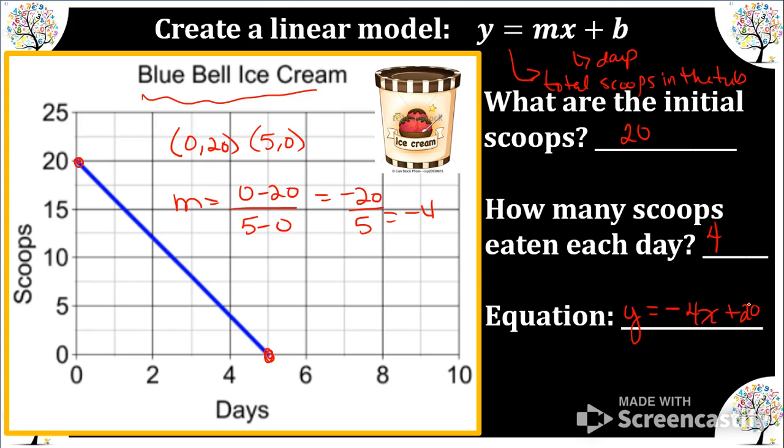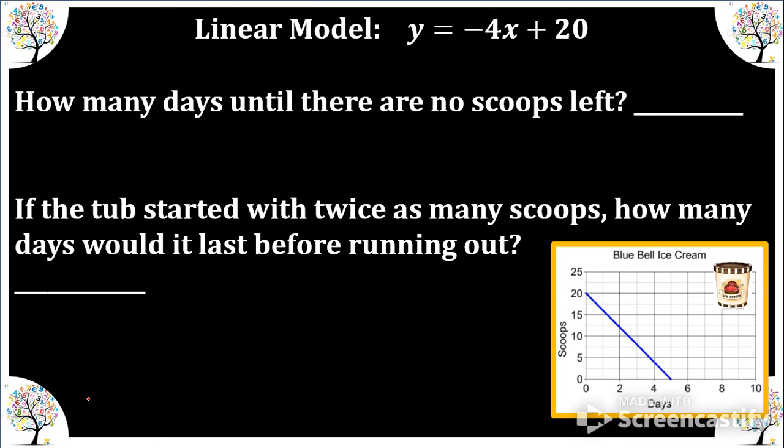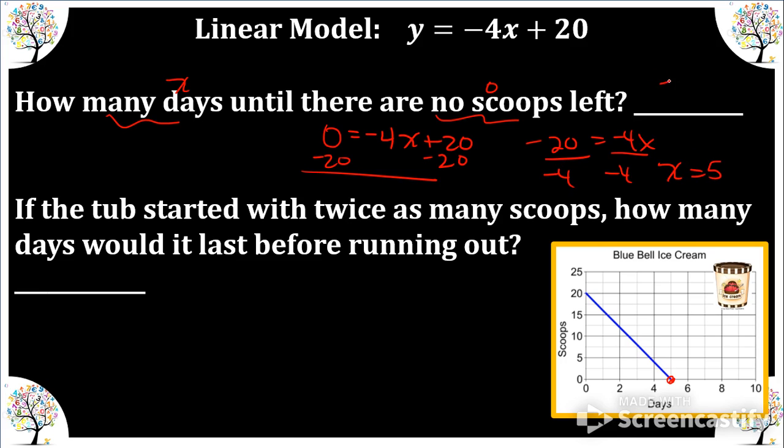And now let's answer some questions using our equation. How many days is there no scoops left? Well, we can clearly see it's five, but let's do the math. So it says how many days that's x until there are no scoops left. So we're going to use the value zero for y. And we're going to solve for x. Divide by negative four on both sides and we see that it is that five.